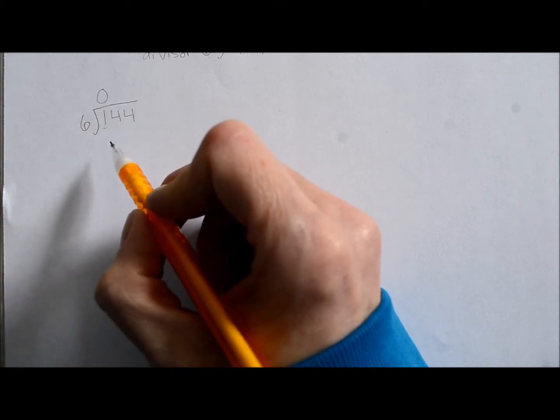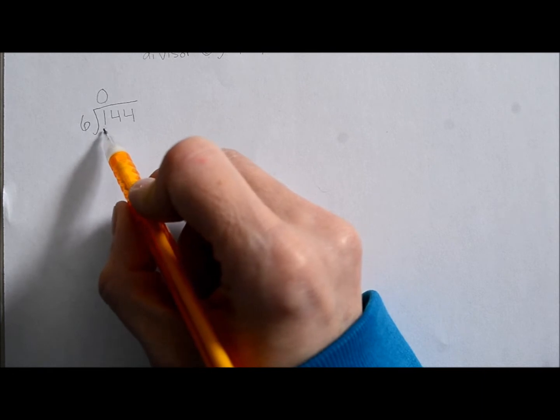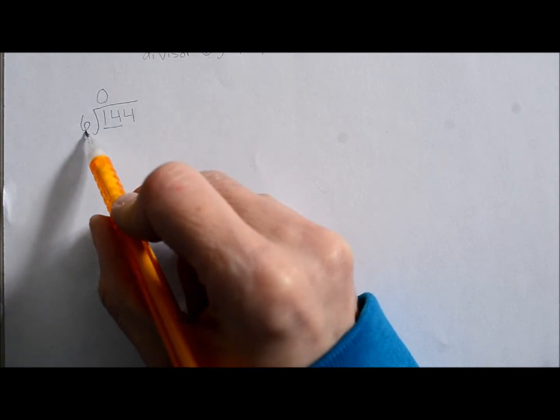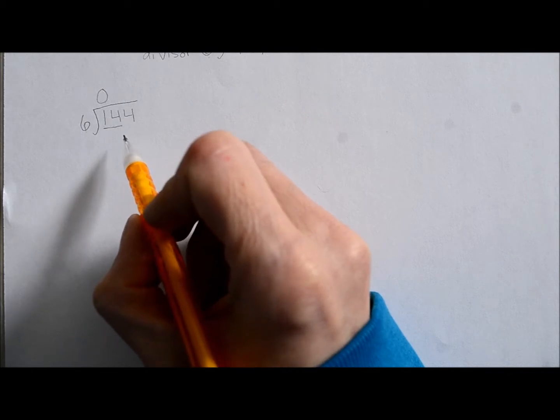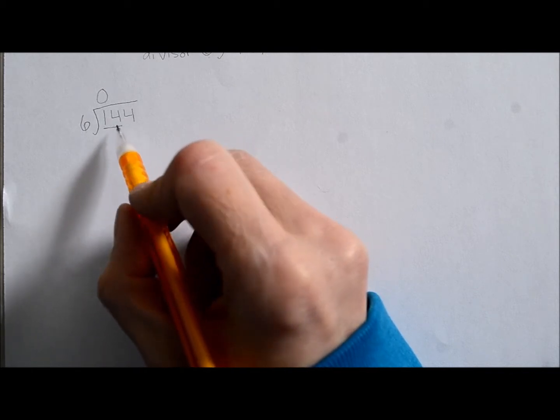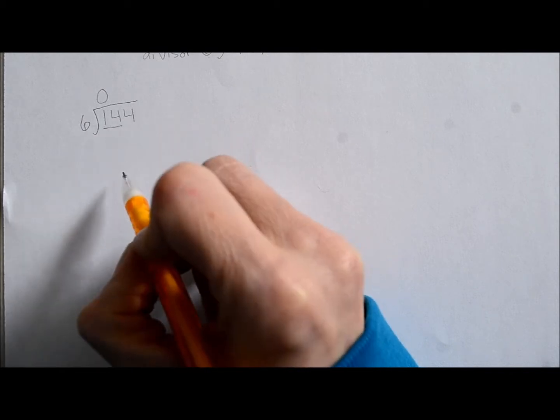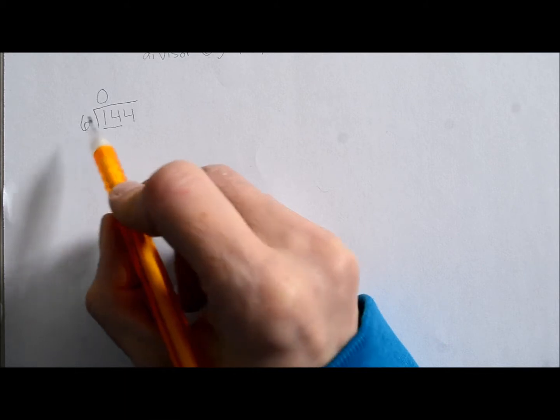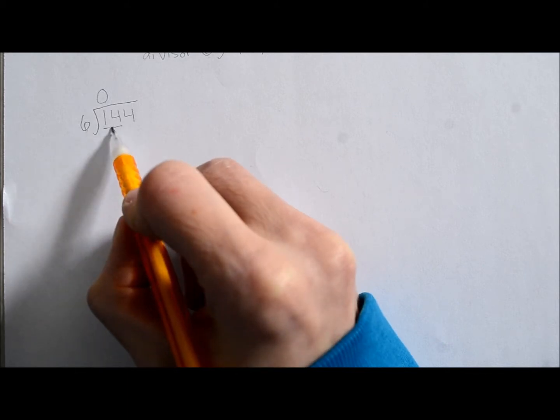All right, now we're going to look at the next digit combined with the first digit. So now we've got 14. Does six go into 14? Yes, it does. How many times does six go into 14? Let's see. Six times one is six. Six times two is 12. Does 12 go into 14? Yes, it does.